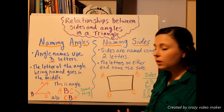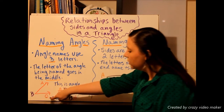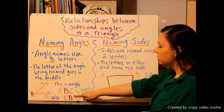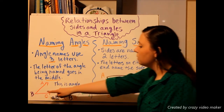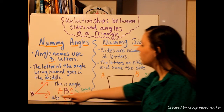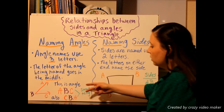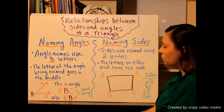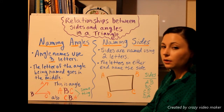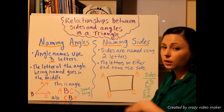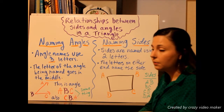You could also name it CBA, as long as you always keep the one that's on the point right in the middle. So those two mean the same thing — ABC and CBA are the exact same.